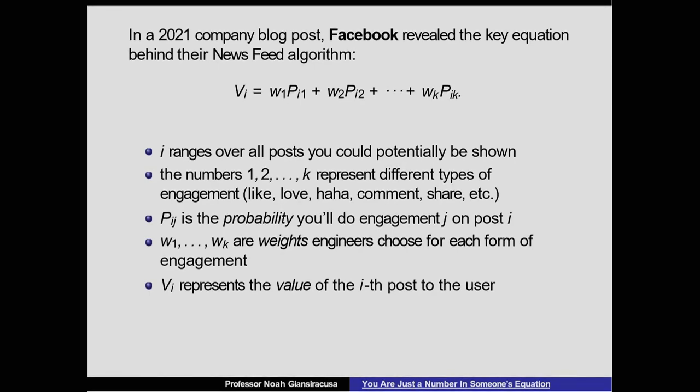So here's the whole algorithm in a nutshell. Out of these 1,000 posts that I'm supposed to consider, that I could potentially be shown in some order, Facebook will go through and compute for each post. So let's say I'm just looking at one particular post. It'll compute the probability that it'll like, share, comment, love, all these different probabilities. And it'll multiply each of those by a weight.